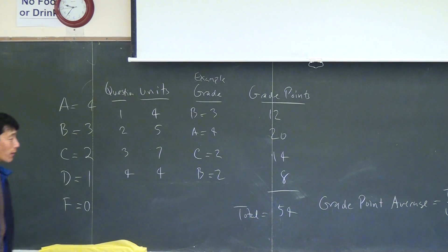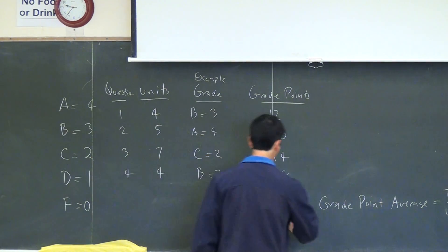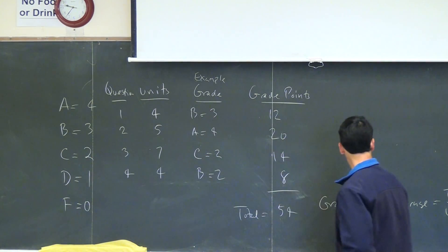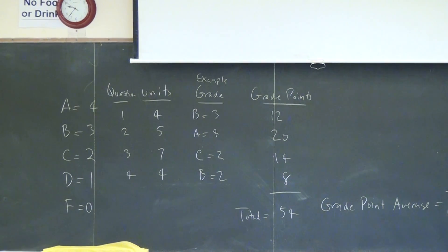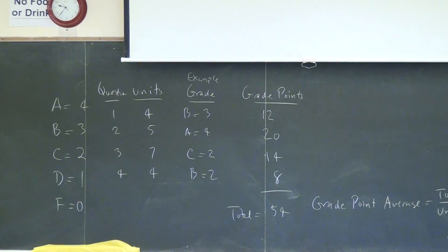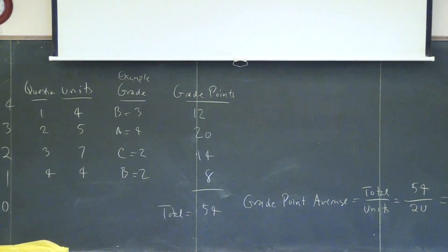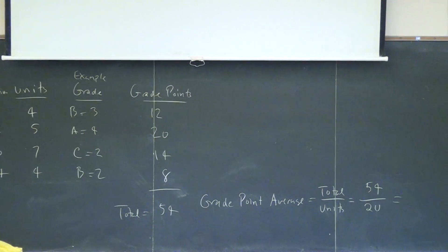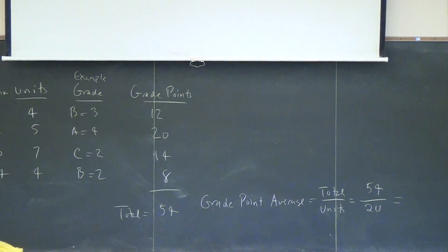To figure out your total grade, you take the total grade points divided by the total number of units. This gives you your grade point average — the same way you calculate the GPA for all the courses that you take.